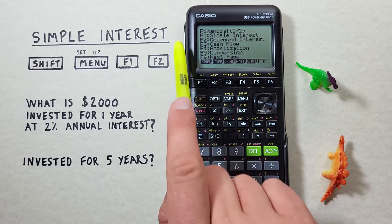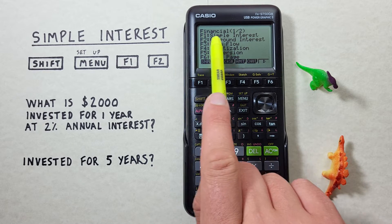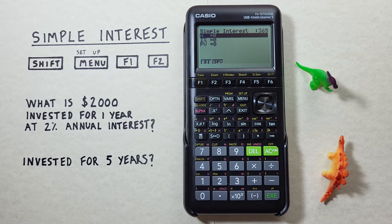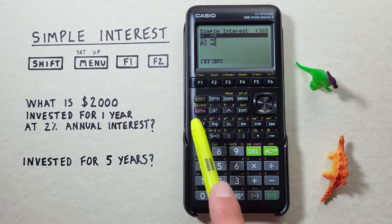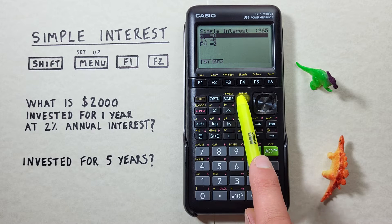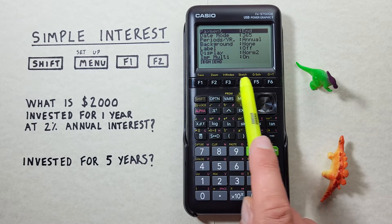That brings us to the financial menu here and since we're doing simple interest we press F1. We can check our setup for this function by pressing shift menu with the shift function of setup to see this screen here.